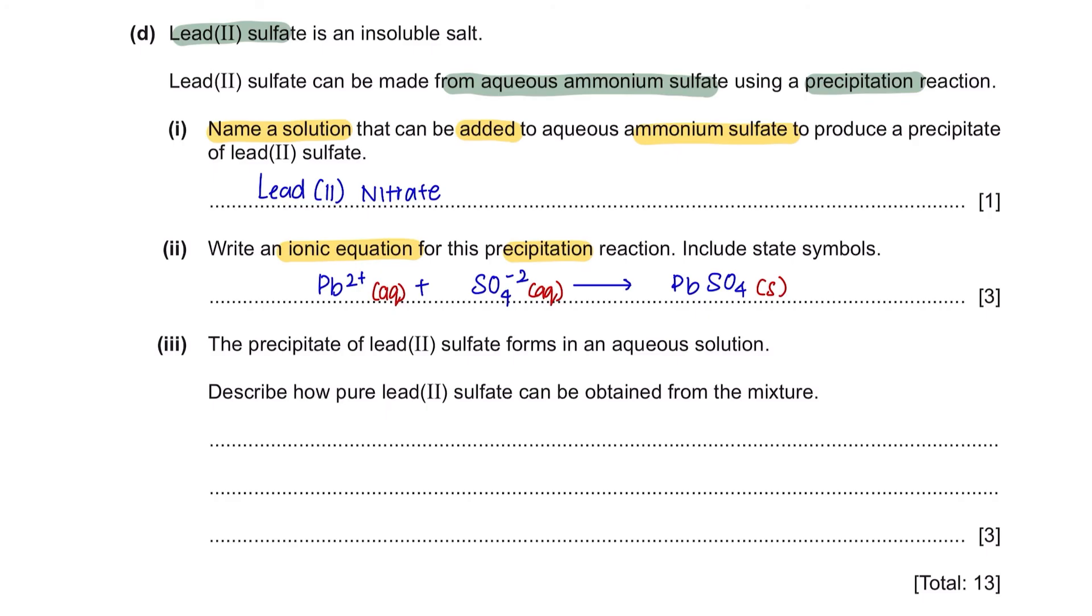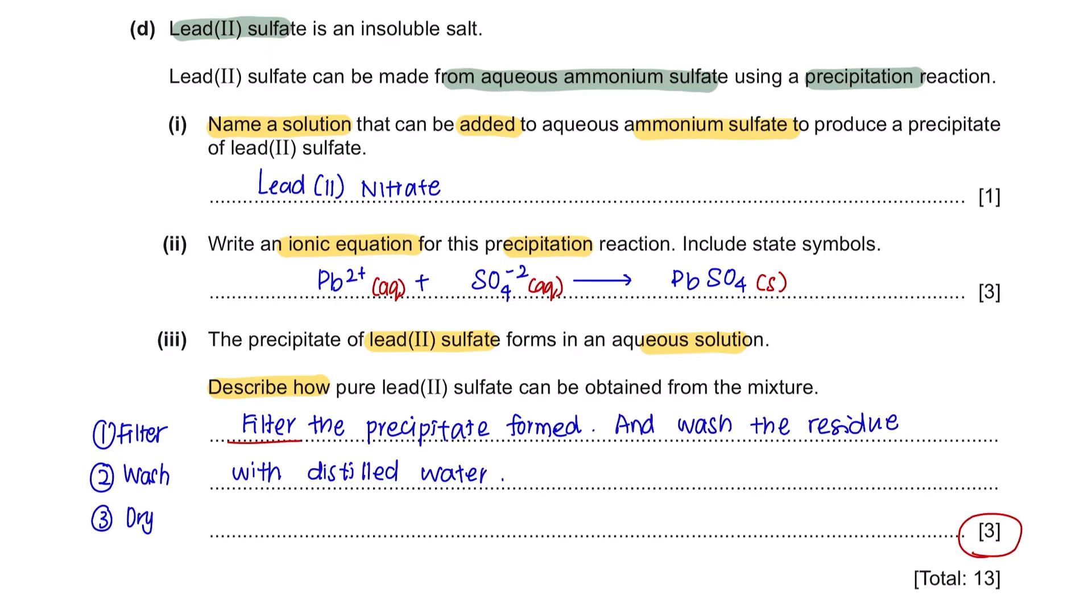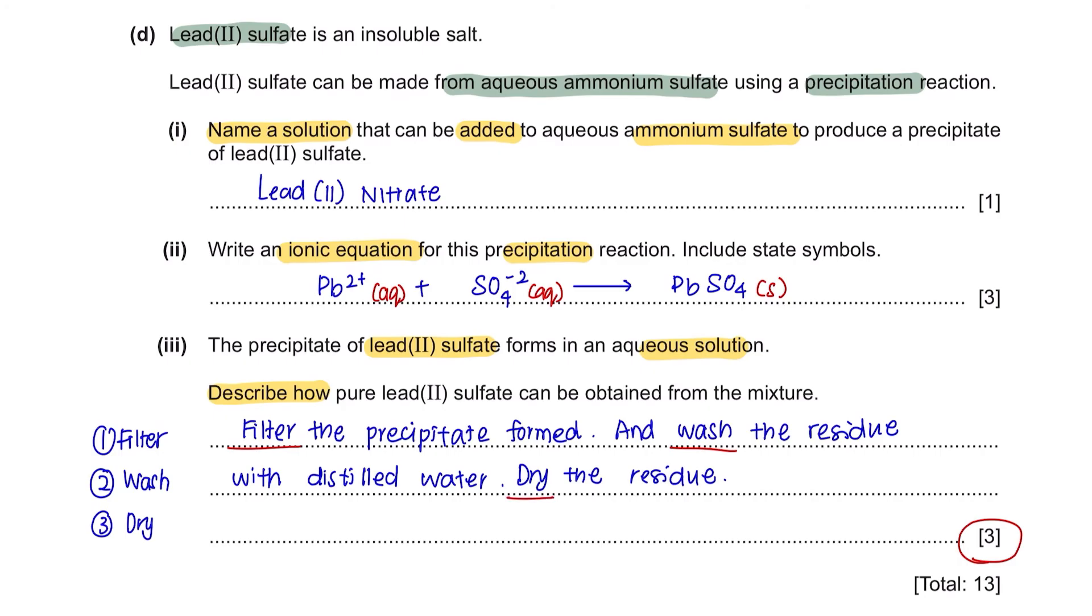Part 3. The precipitate of lead sulfate forms in an aqueous solution. Describe how pure lead sulfate can be obtained from the mixture. This is describing how to obtain the precipitate that is being formed. So we can simplify this process into 3 key points: Filter, wash and dry. Firstly, filter the precipitate formed. Next, wash the residue with distilled water and finally, dry the residue to get your salt. Make sure your answer have these 3 keywords to get a full 3 marks.